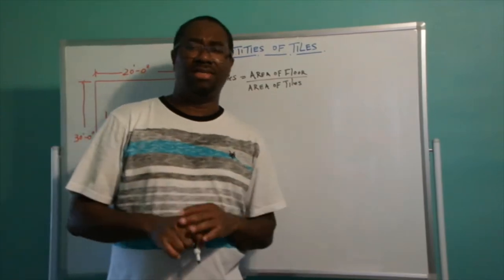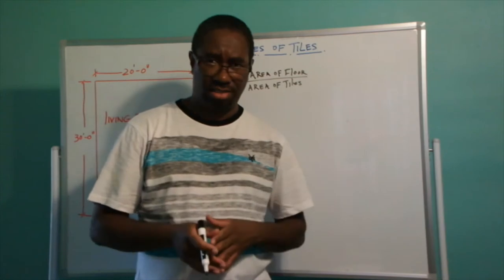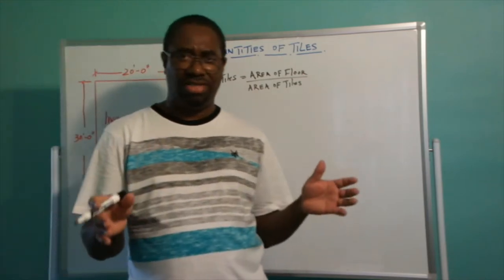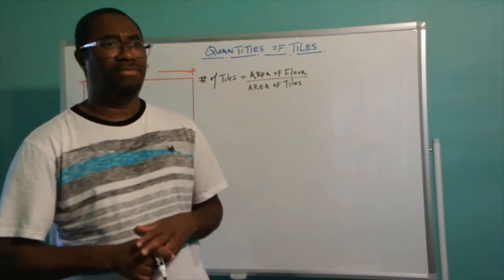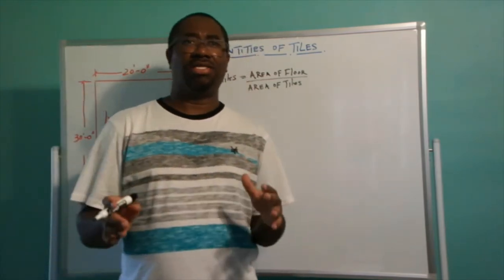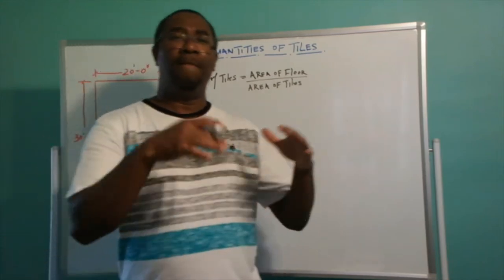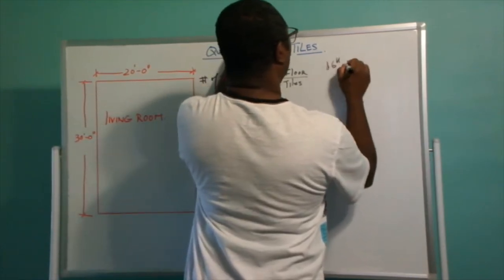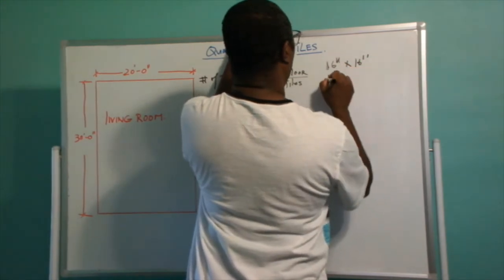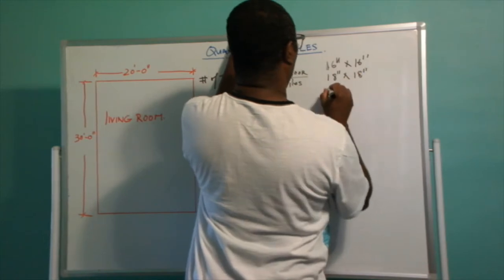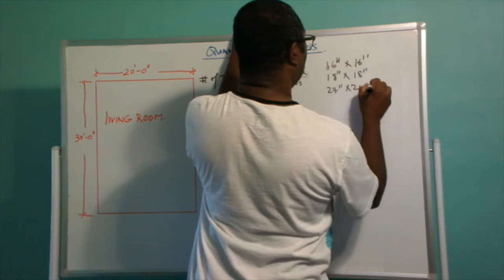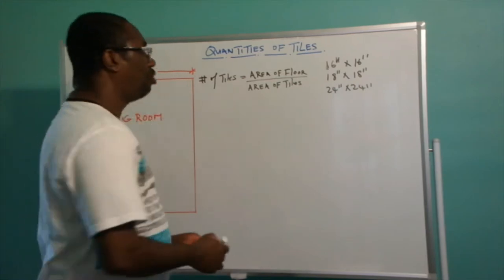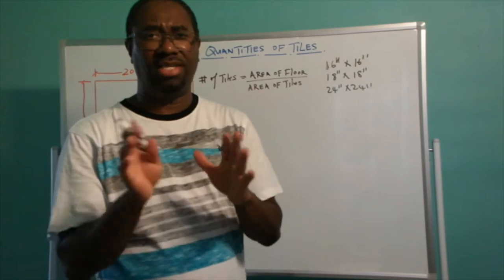Tiles come in various sizes. Previously you could get 12 inches by 12 inches tiles, and I think you still can. But based on what I have seen now, tiles are much bigger and many people are utilizing bigger size tiles. We have tiles of sizes 16 inch by 16 inch, 18 inches by 18 inches, and 24 inches by 24 inches. For this presentation, I am going to use the 16 inches by 16 inches tiles.